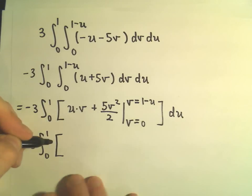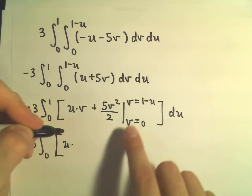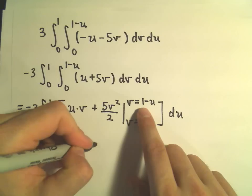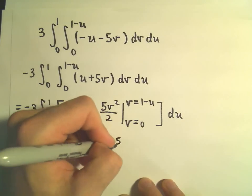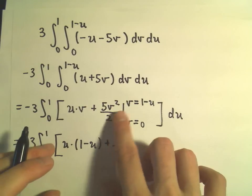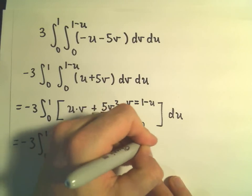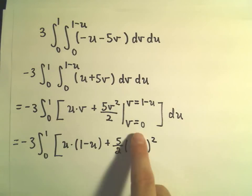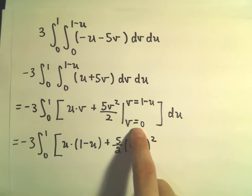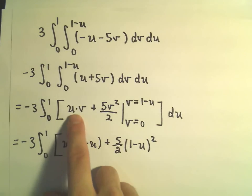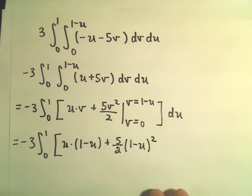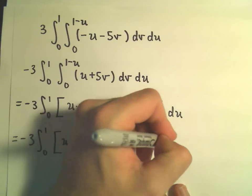Those are the breaks. So we'll have u times v, which is 1 minus u, plus 5 halves times v squared, which again is 1 minus u quantity squared. And I think you can convince yourself if you plug in the lower limit of integration of v equals zero, we'll just get a zero and another zero, so I'm not going to write all that out.